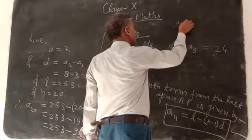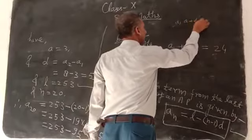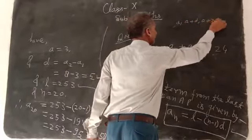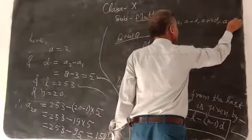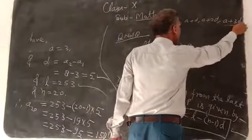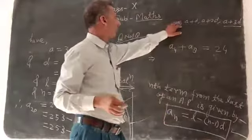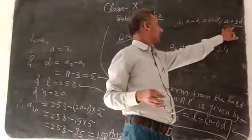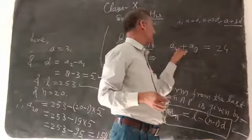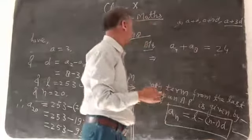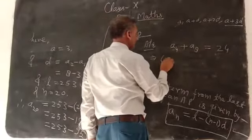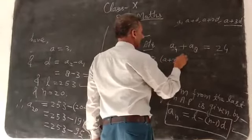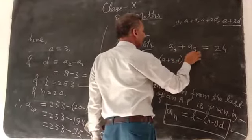General terms are A, A plus d, A plus 2d, and A plus 3d. Here is A1, A2, A3, A4 is equal to 4, so it is 4. So if A4 comes, what happens? A plus 3d. I said here, children, A4 comes.